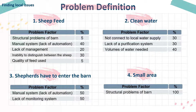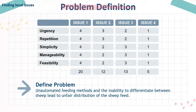Then, to define the problem, we wanted to find the problem factor for each problem and find the main factor of the problem by weighing it for each factor. We reduced the problem to one by differentiating the score based on the four issue criteria. As a result, the sheep's food imbalance was the first problem to be solved, and depending on the weight, the factor could be the lack of an automation system.